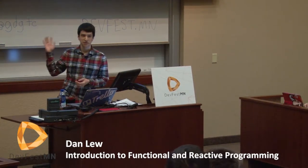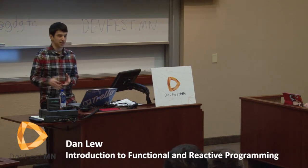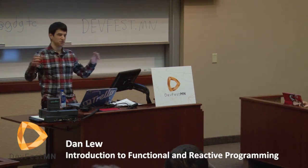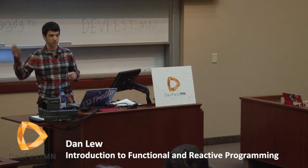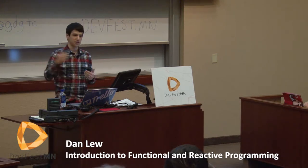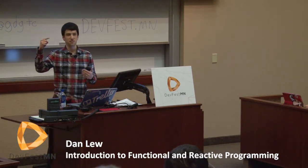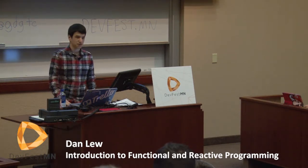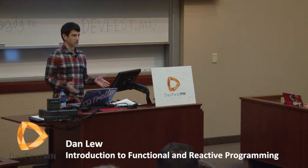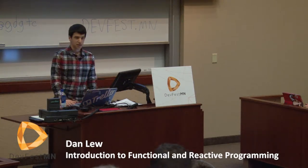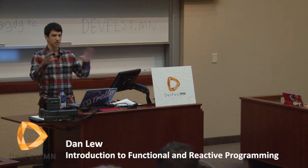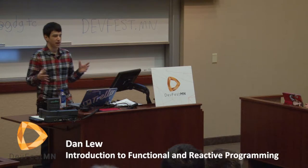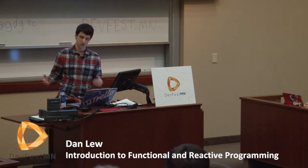The example I'm going to keep using throughout this talk is one of a light switch and a light bulb, because you can imagine this in code as two separate modules. One module is the light switch module and one is the light bulb module. When the light switch is flipped in one direction, the light bulb turns on; in the other direction, it turns off. The question becomes: how exactly do these two modules couple together? And what reactive streams is all about is viewing it in maybe a different way than you're used to.